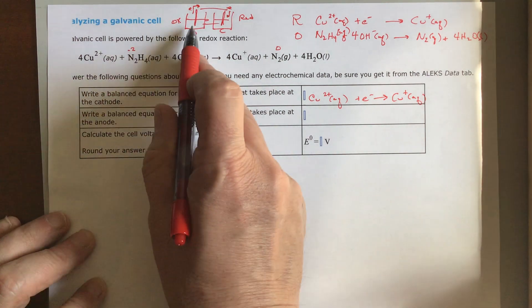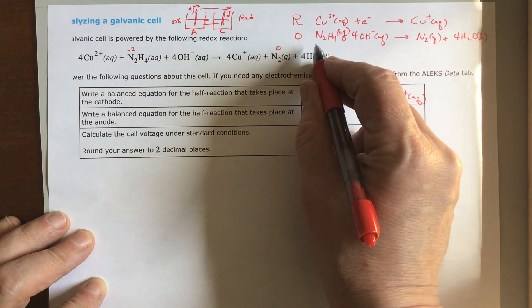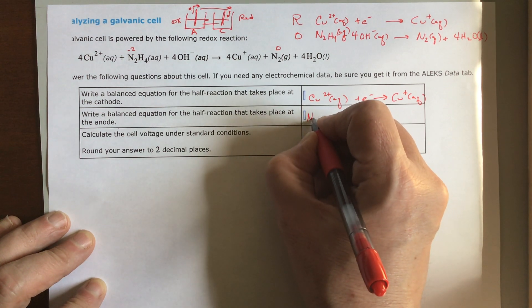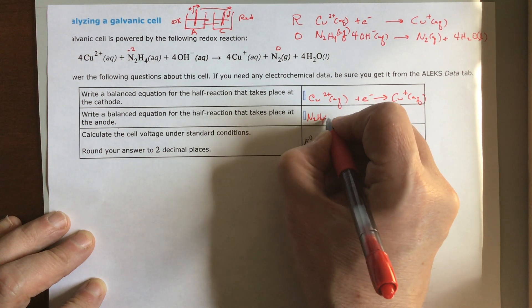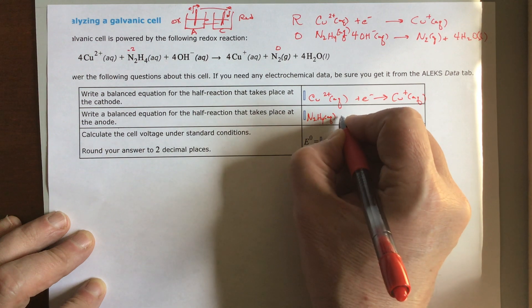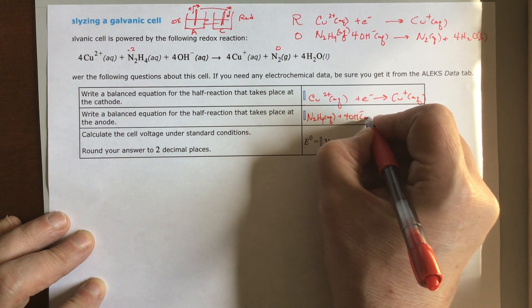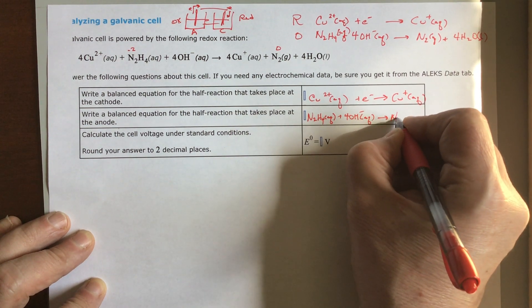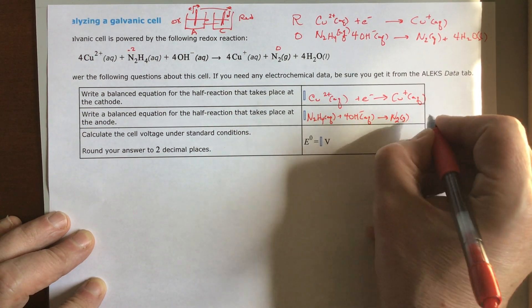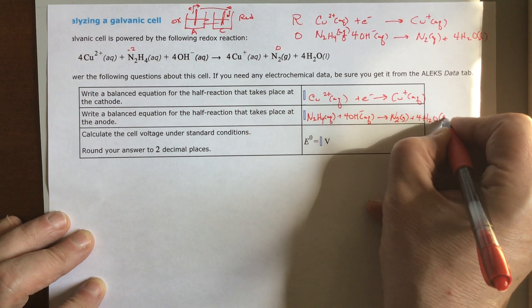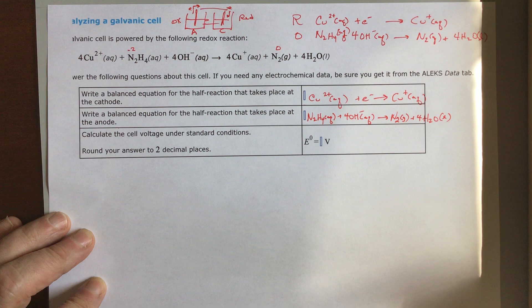The other one at the anode is your oxidation step. So this is N2H4 aqueous plus 4OH- aqueous yields N2 gas plus 4H2O liquid. That's happening here.